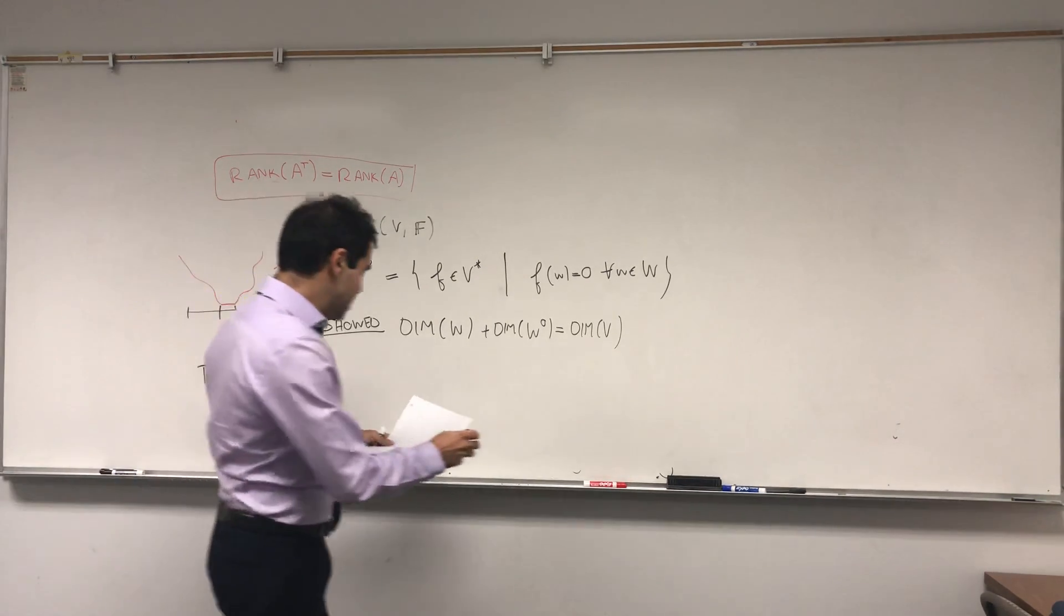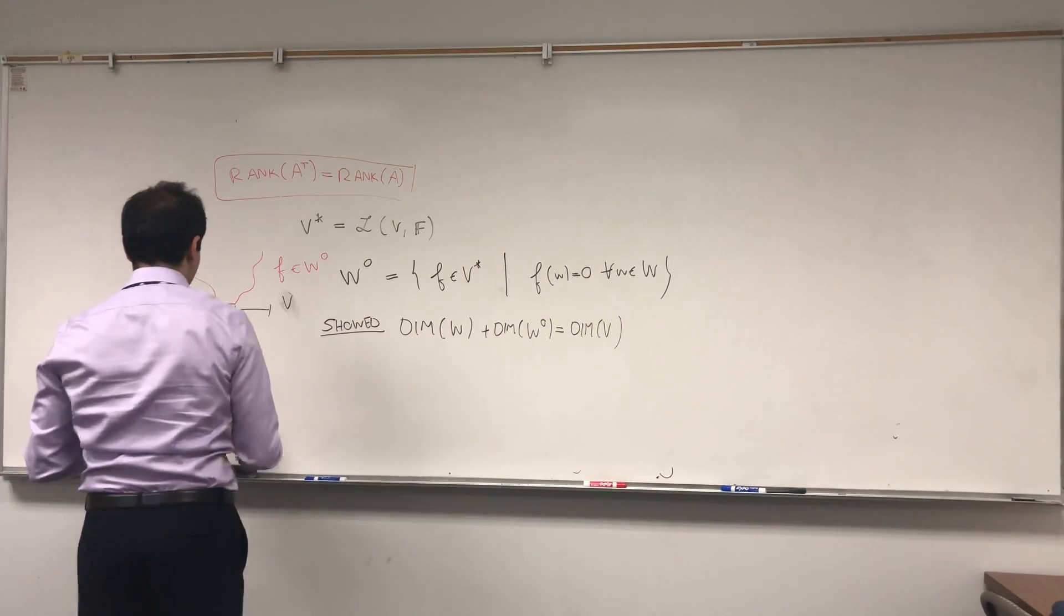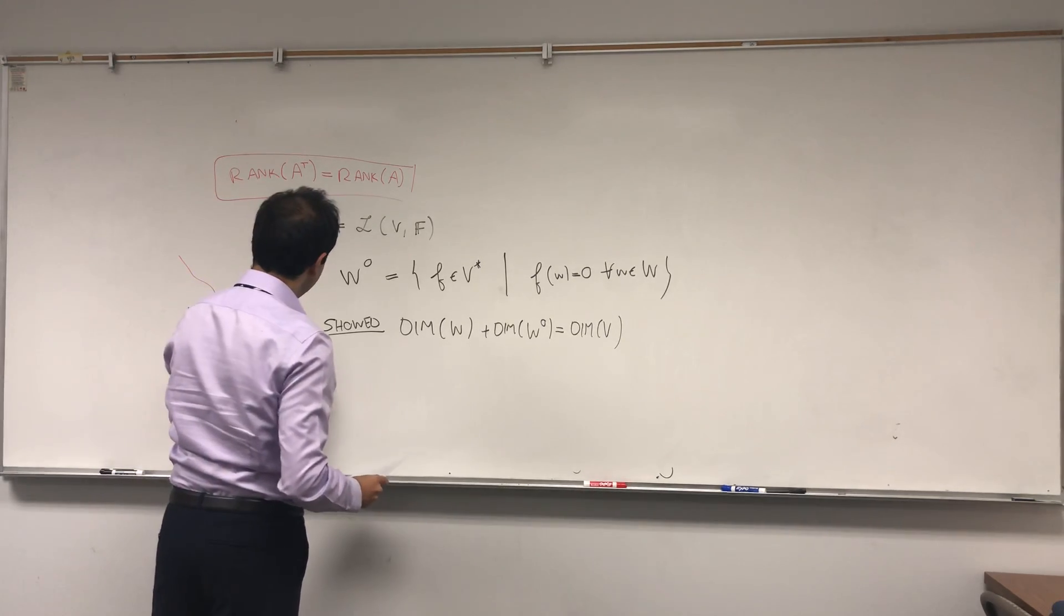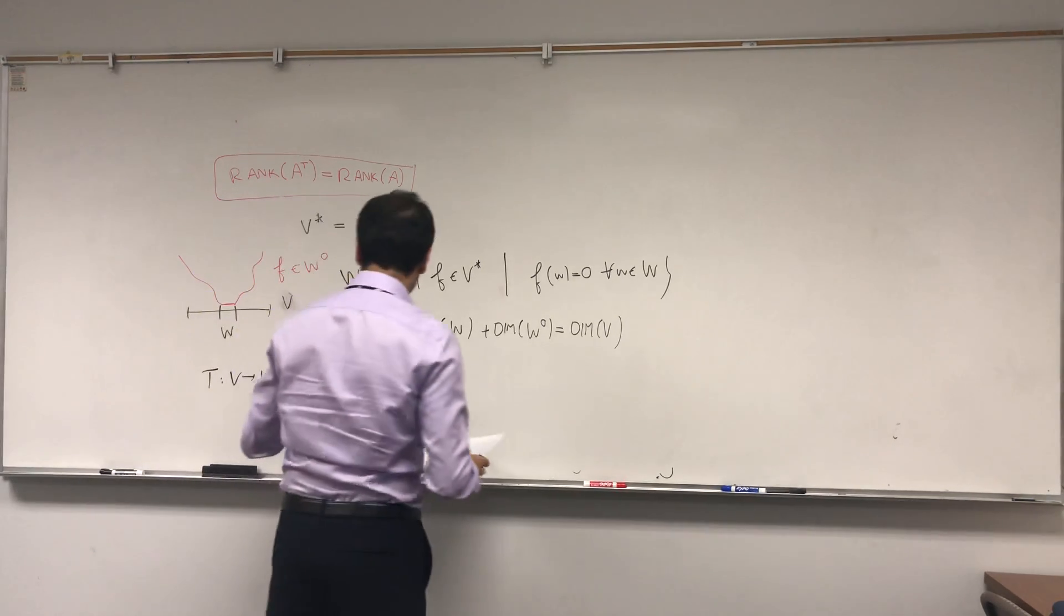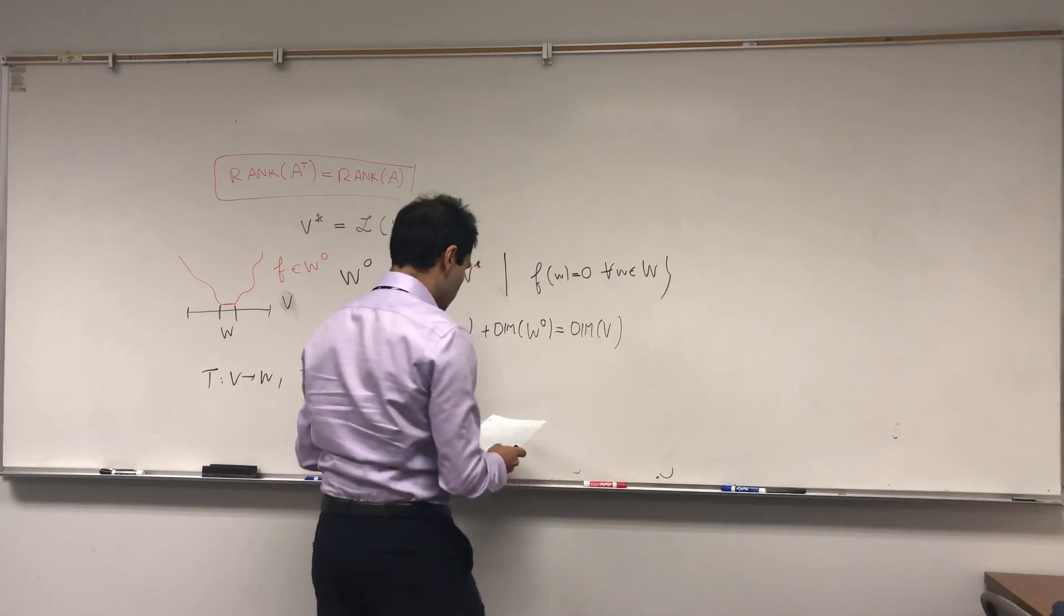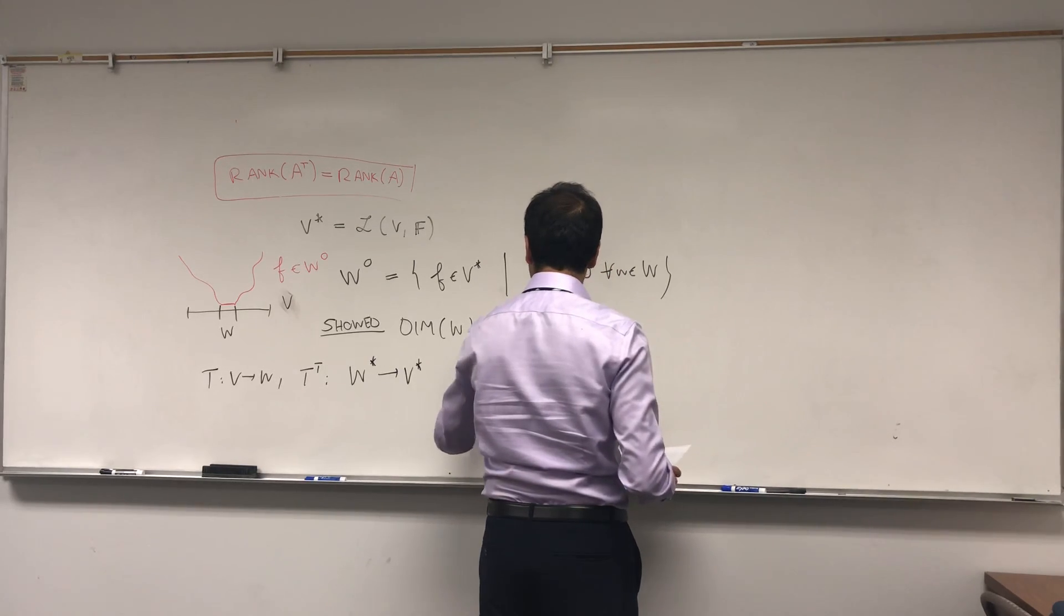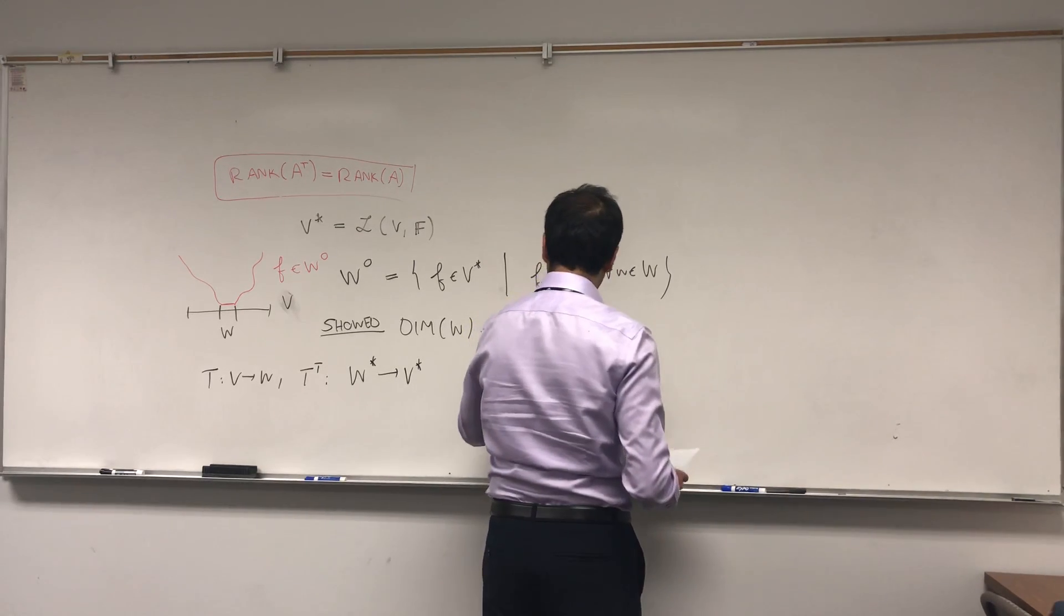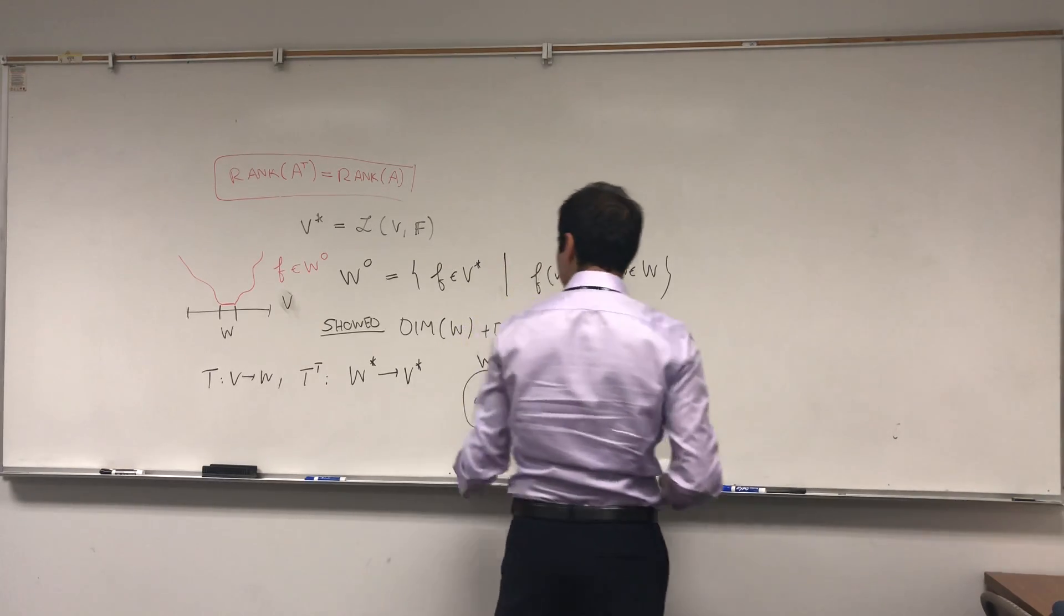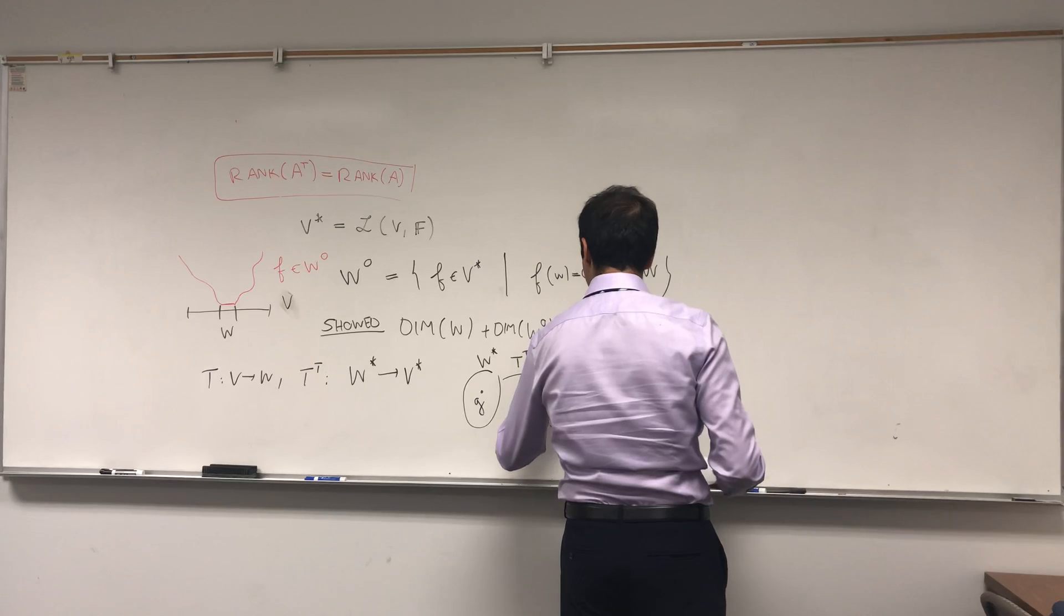So suppose T is a linear transformation from V to W. Then we can define T transpose where it's flipped. It goes from W star to V star. So again, T transpose goes the other way around.